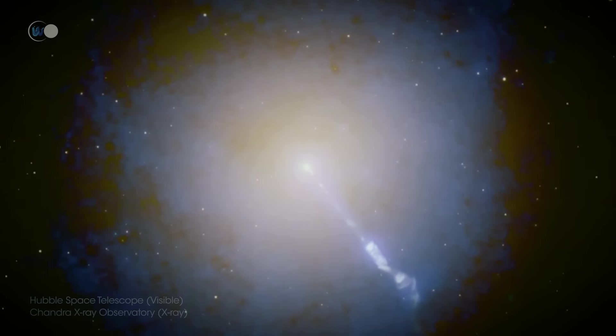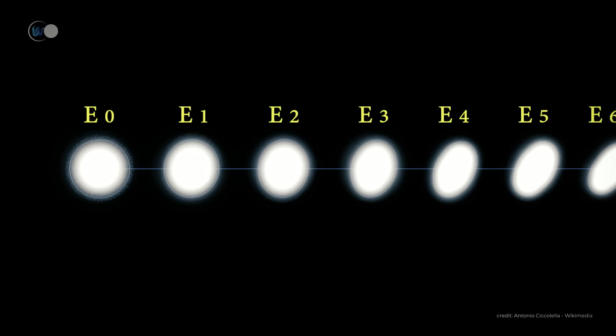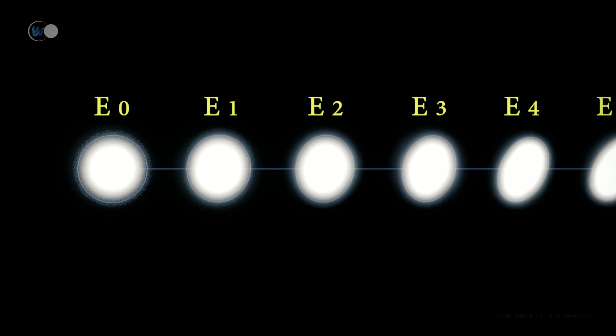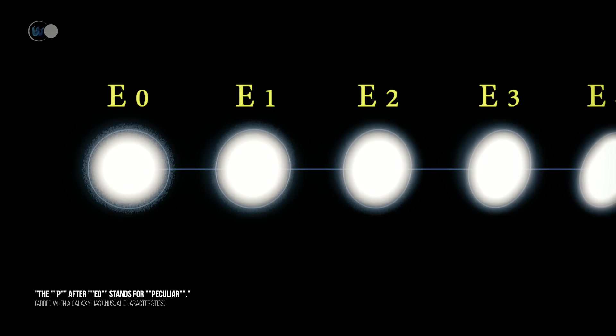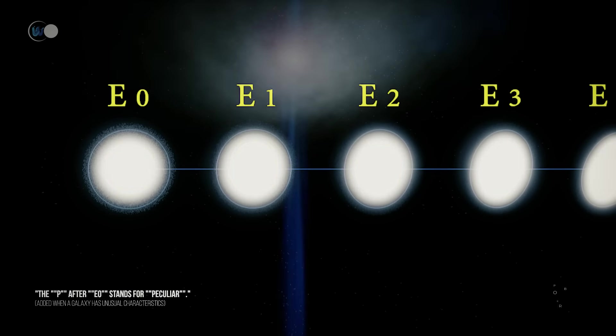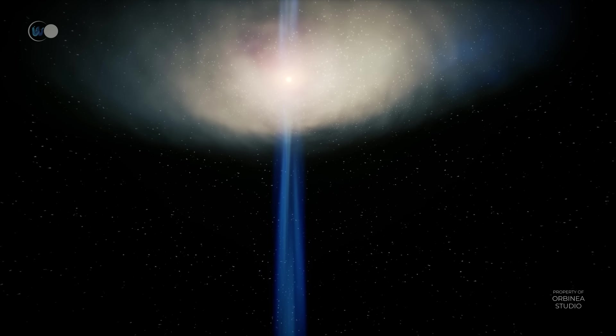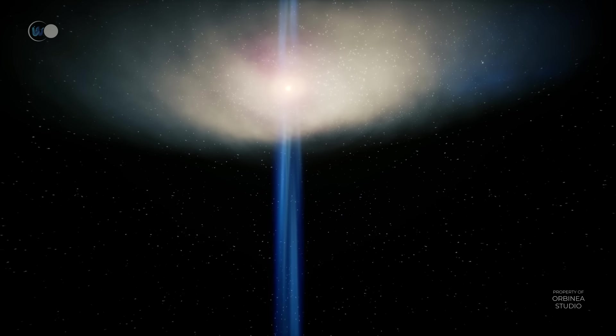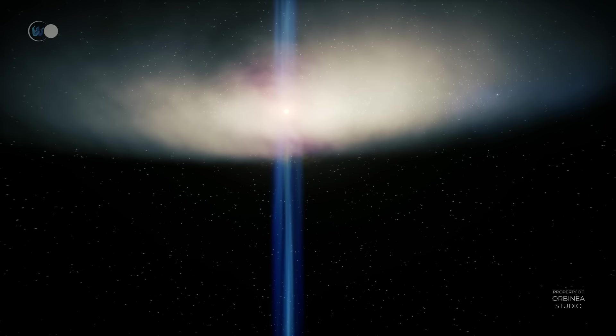According to Hubble's classification, M87 is designated as an EOP galaxy. The EO designation implies an elliptical galaxy showing no flattening, and the P categorizes it as a peculiar galaxy as it does not fulfill all the characteristics of its class due to the presence of the jet emanating from its core.